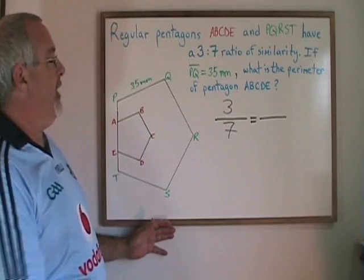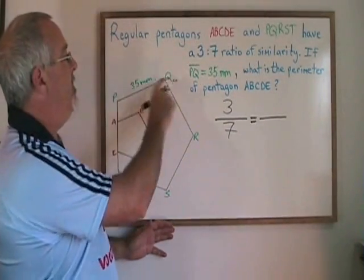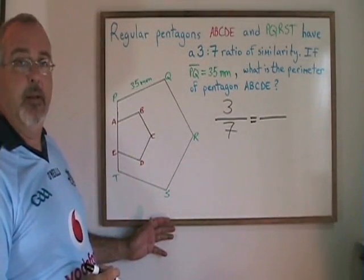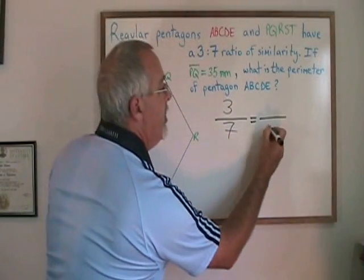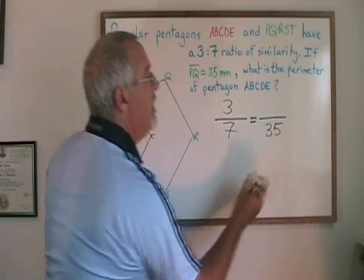We are given a side length of the larger pentagon, side PQ is equal to 35 mm. Because it's part of the larger pentagon, that side must go with the 7, the 35 goes here on the bottom with the 7.